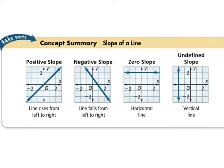A line with zero slope is a horizontal line, and the equation of that line is something like y equals a number. Undefined slope is a vertical line where the equation would be something such as x equals a number.